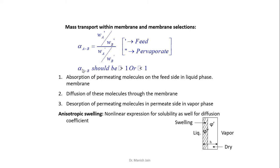The value of selectivity should be higher than 1 or lower than 1 for separation to occur in the pervaporation process — it should not be nearly equal to 1, otherwise separation does not occur. The transport of molecules across the membrane can be divided into three different steps: first, adsorption of permeating molecules on the feed side in liquid phase at the membrane surface; second, diffusion of these molecules through the membrane from feed side to permeate side; and third, desorption of the permeating molecules at the permeate side in the vapor phase.